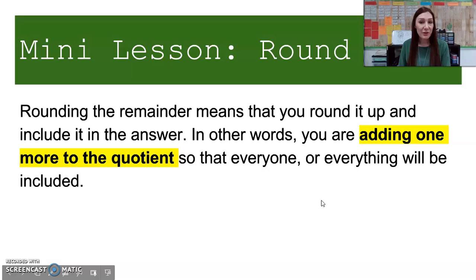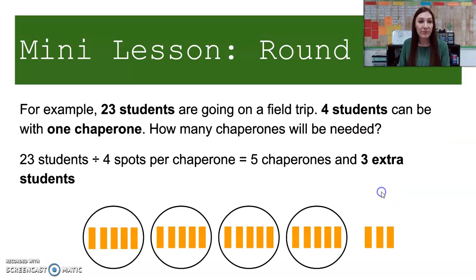Rounding the remainder means that you round it up and you include it in the answer. In other words, you are adding one more to your quotient so that everyone or everything will be included. For example, 23 students are going on a field trip. Four students can be with one chaperone. How many chaperones will be needed?